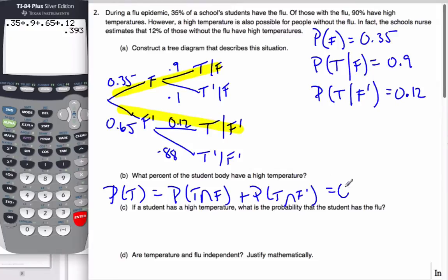That's the notation that comes with it, which is going to be the multiplication of these two branches, and then I add them together. So that's going to be 0.35 times 0.9 plus 0.65 times 0.12. And when I do that calculation, I've done it up here already, you can see that it is 0.393. So 39.3% of the people have a high temperature at this point in time.